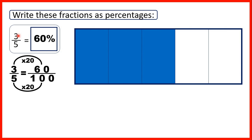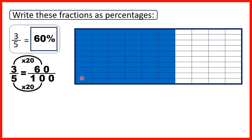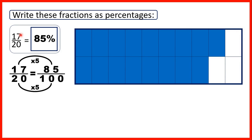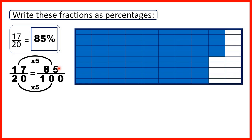Then we had three-fifths. We found that that was equivalent to sixty-hundredths, so sixty percent. And finally, we had seventeen-twentieths, so seventeen parts out of twenty. We found that that was equivalent to eighty-five hundredths, so as a percentage, seventeen-twentieths is eighty-five percent.